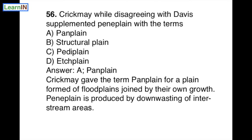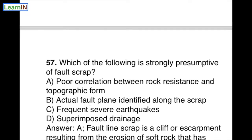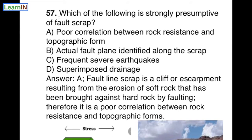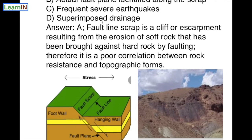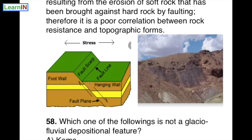Moving to question 57: Which of the following is strongly presumptive of a fault scarp? This question has been discussed earlier, so it is also a revision. There are four options. The correct answer is A — poor correlation between rock resistance and topographic forms — that is strongly presumptive of a fault scarp.